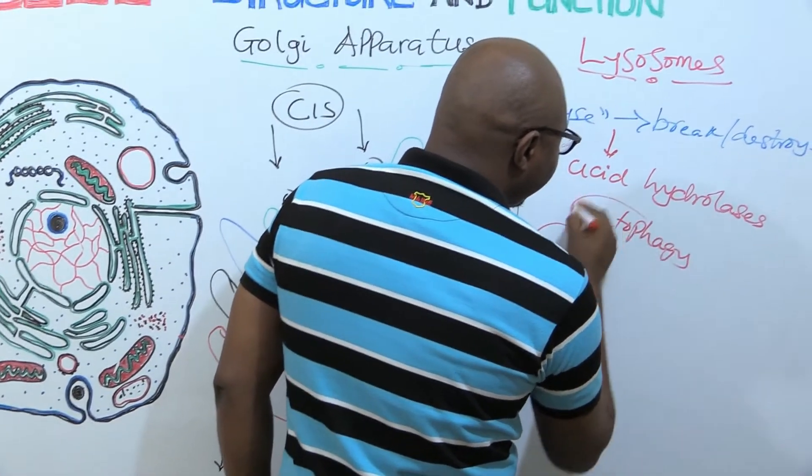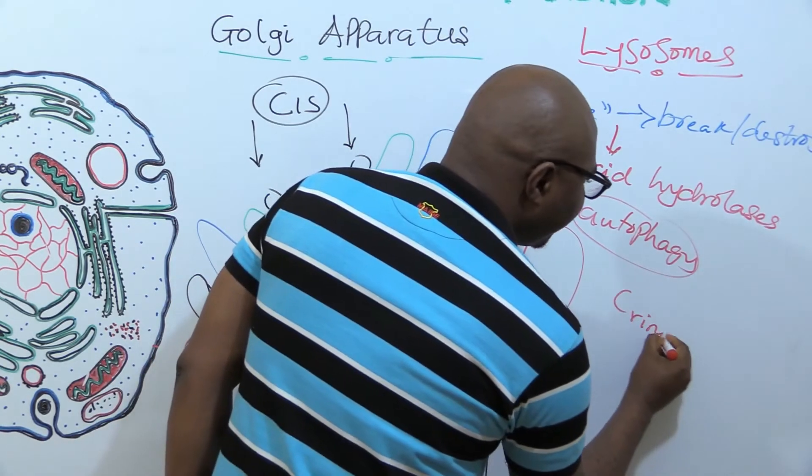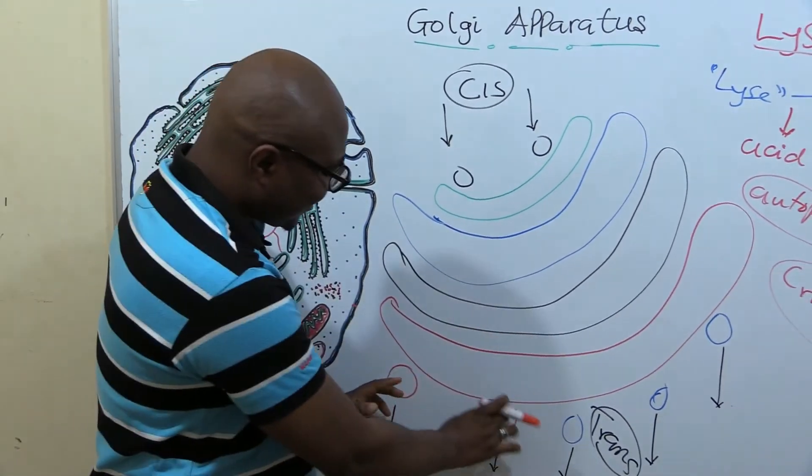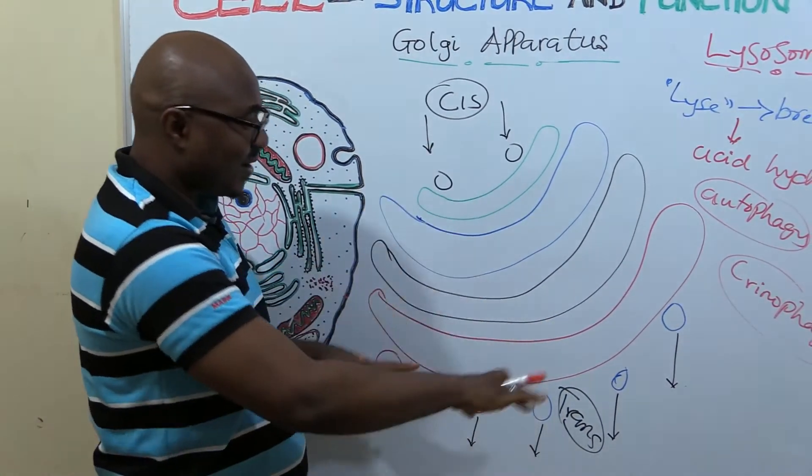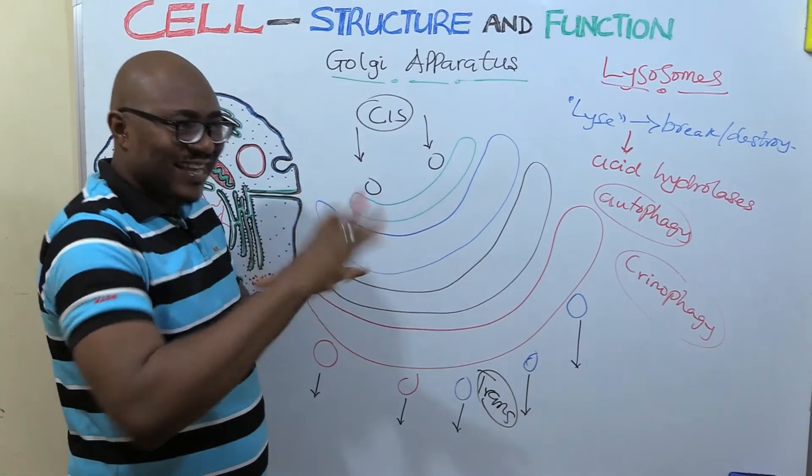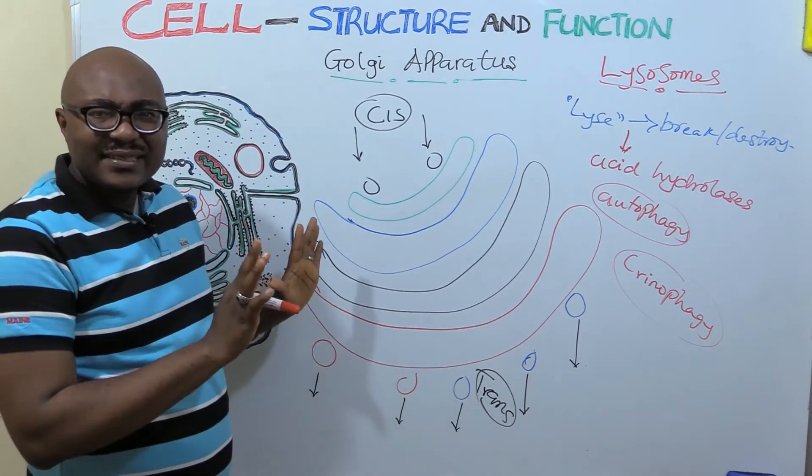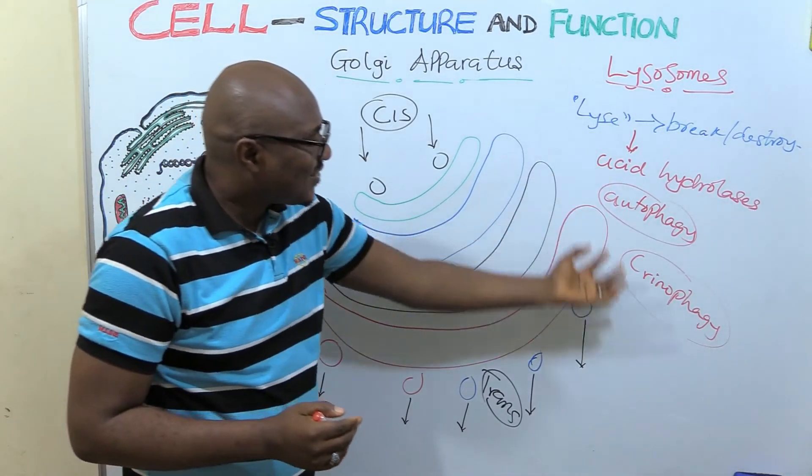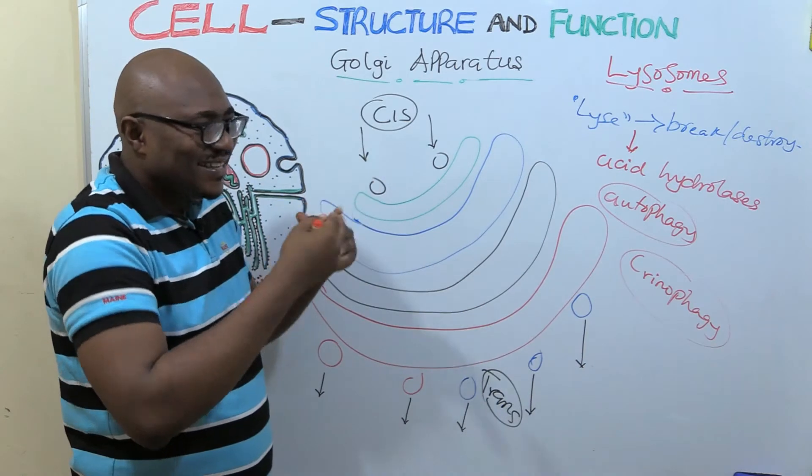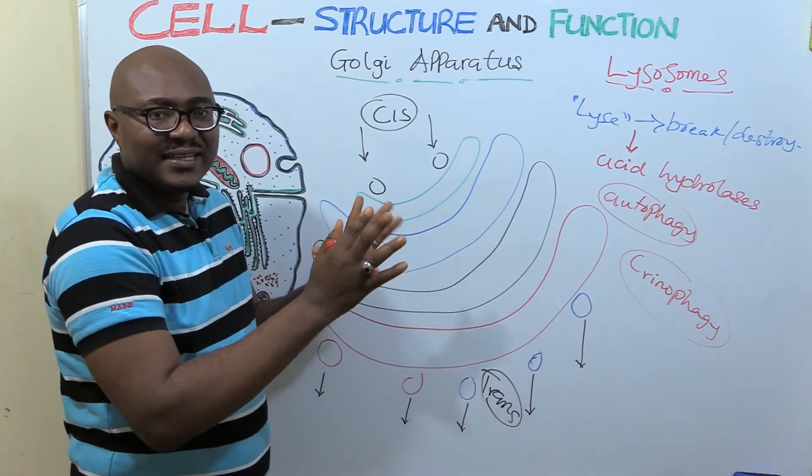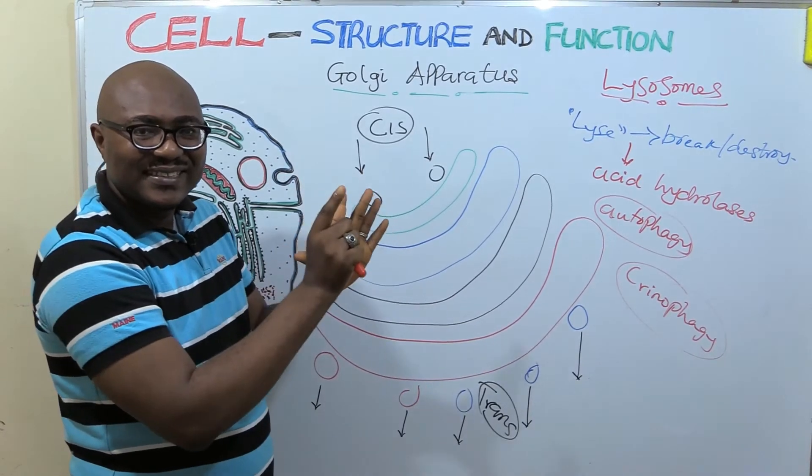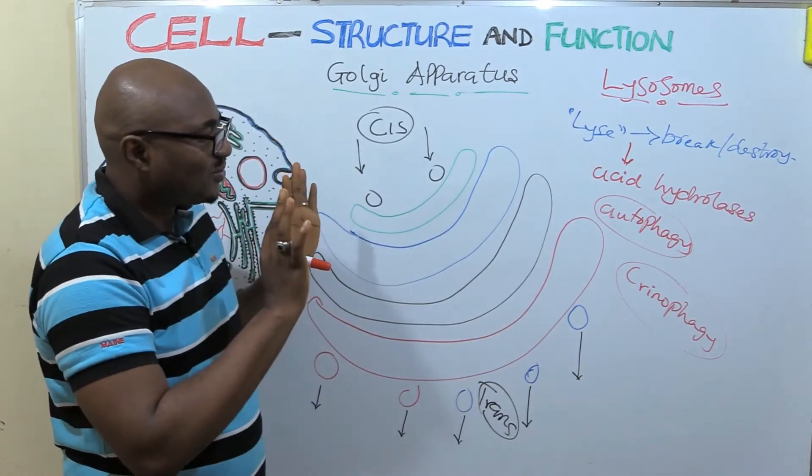Then there's another function called crinophagy. In this one, it has to do with the secretory substances that are secreted. These vesicles, they are secretory vesicles from the Golgi apparatus. A lot of cells that secrete a lot, they have a lot of Golgi apparatuses, like glands. So sometimes they can secrete excess and the cell does not want that. So what does it do? The lysosome takes part of those excess and digests them through hydrolysis. Breaks them down into the simple substances that they came from. Glucose and all of that. That's how they are made. So it breaks them down into simple substances. So that's crinophagy.